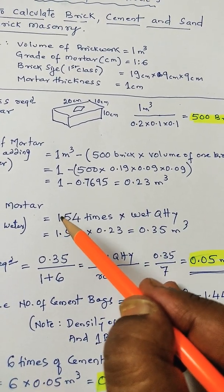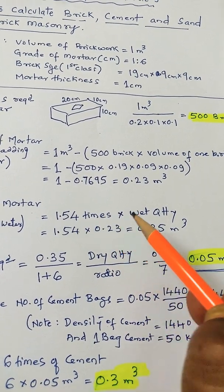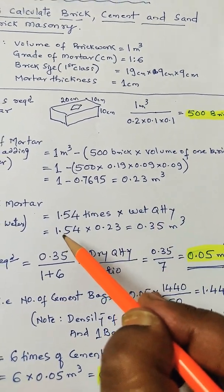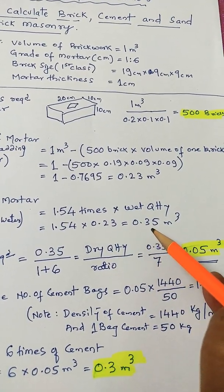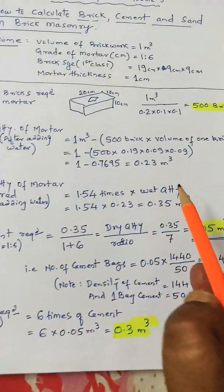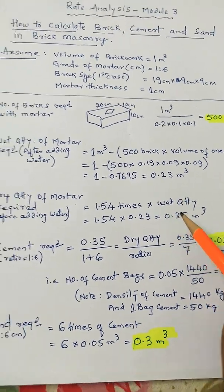So dry quantity required is 1.54 times the wet quantity. That is 1.54 into this wet quantity. You will get 0.35 meter cube. So this is the dry quantity of mortar required.